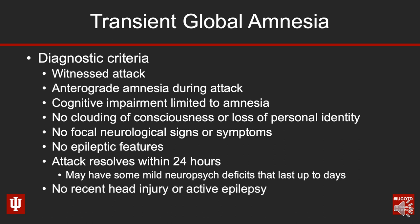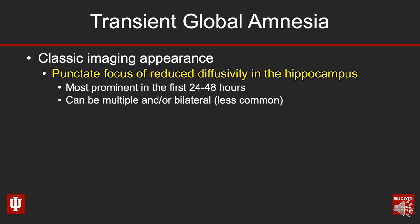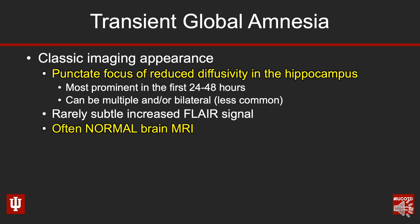These patients also cannot have any concurrent head injury or active epilepsy. With transient global amnesia, there is a classic imaging appearance described as a punctate focus of reduced diffusivity within the hippocampus. This is most prominent within the first 24 to 48 hours, but it is variable. Interestingly, it can be multiple on the same side, or even bilateral — though that's less common. In rare instances, you may see some very subtle FLAIR signal intensity associated with it, as this case shows.